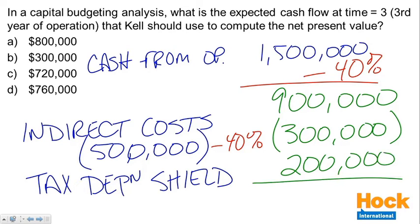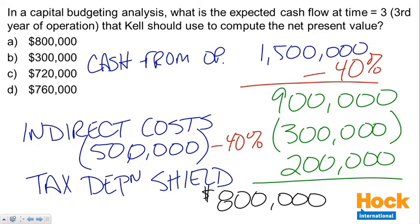So in year three, these are our cash flows — also the same for year one and year two. We've got $900,000 of after-tax cash flow from operations, a $300,000 after-tax cash outflow for those indirect costs, and a $200,000 inflow from the tax depreciation shield. Adding all of this together, we get $800,000 as the cash flow for year three.